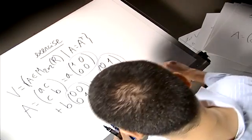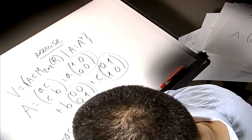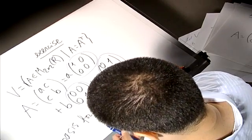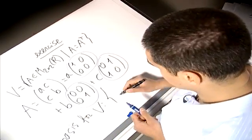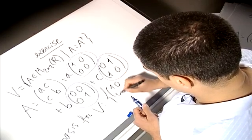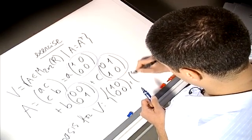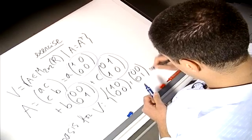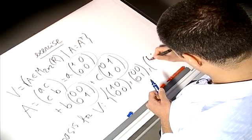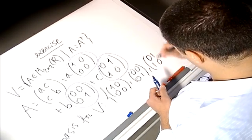So a basis for V is just formed by these three matrices: [[1,0],[0,0]], [[0,0],[0,1]], [[0,1],[1,0]]. And from this exercise you learn that such a subspace has dimension 3.